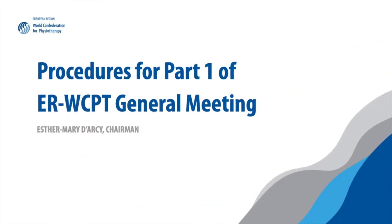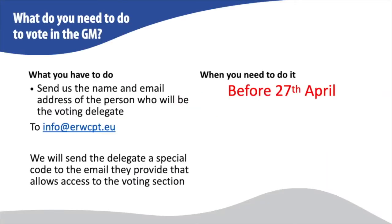I want to turn now towards the procedures for part one of the ERWCPT general meeting. In order for you to cast your vote for your member organisation, we need you to send us the name and the email address of the person who will be the voting delegate. Please send this to info@erwcpt.eu before the 27th of April. In return we will send the delegate a special code to the email they provide that allows access to the voting section.